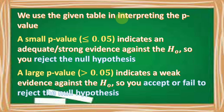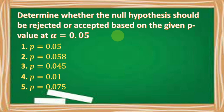We're going to use the given table in interpreting the p-value. For a small p-value — less than or equal to 0.05 — it indicates adequate or strong evidence against the null hypothesis, so you reject the null hypothesis. For a large p-value — greater than 0.05 — it indicates weak evidence against the null hypothesis, so you accept or fail to reject the null hypothesis. We will now determine whether the null hypothesis should be rejected or accepted based on the given p-value at alpha level equal to 0.05, also known as the significance level.